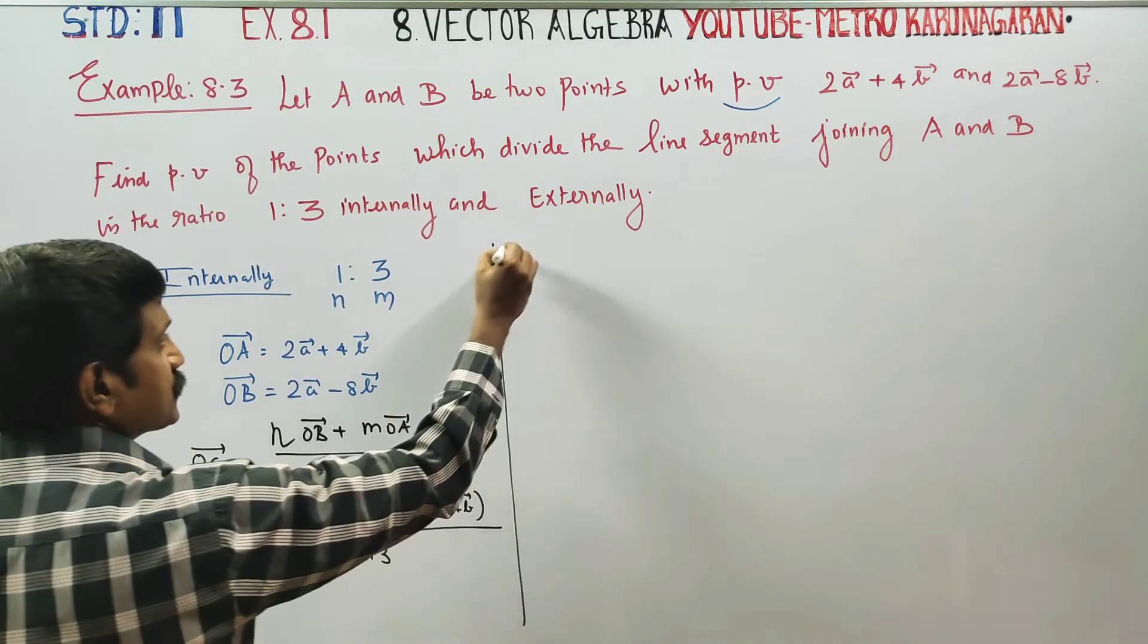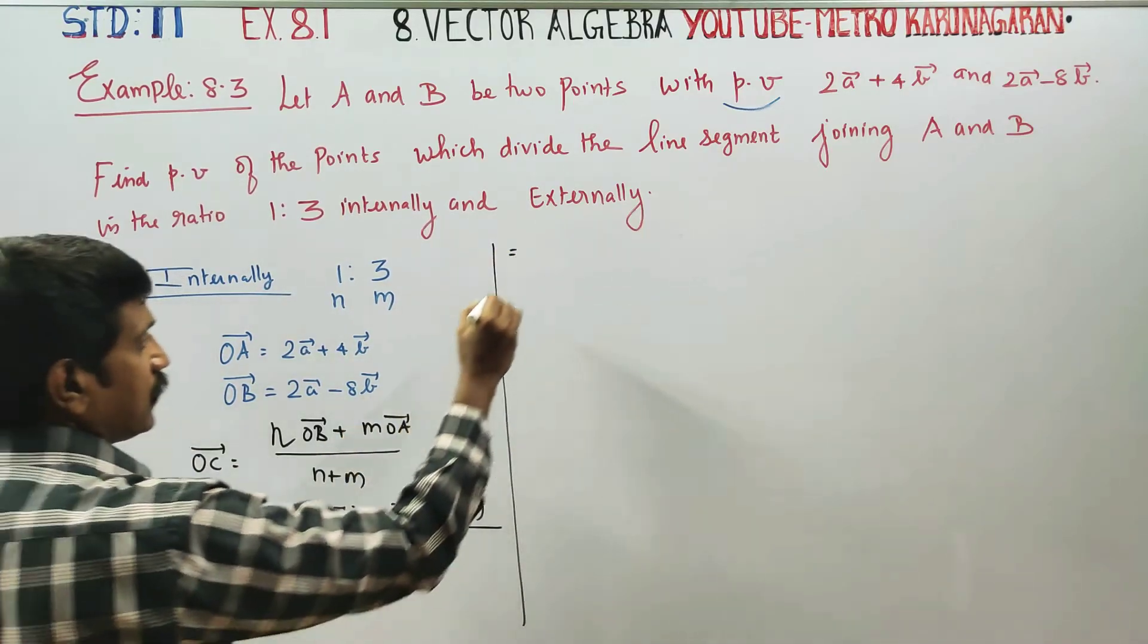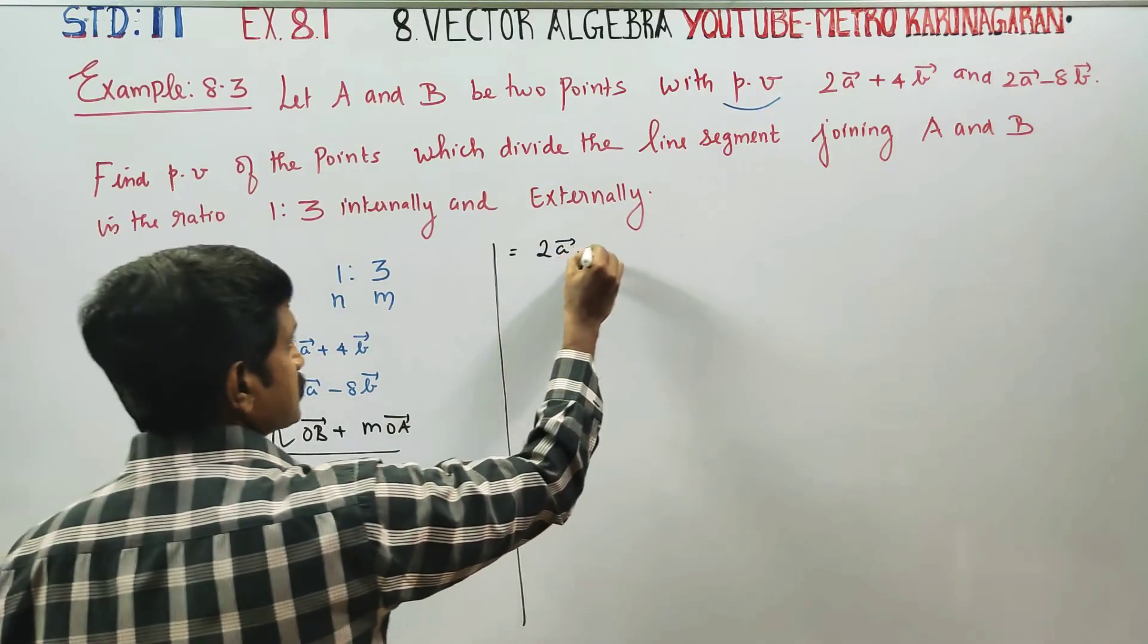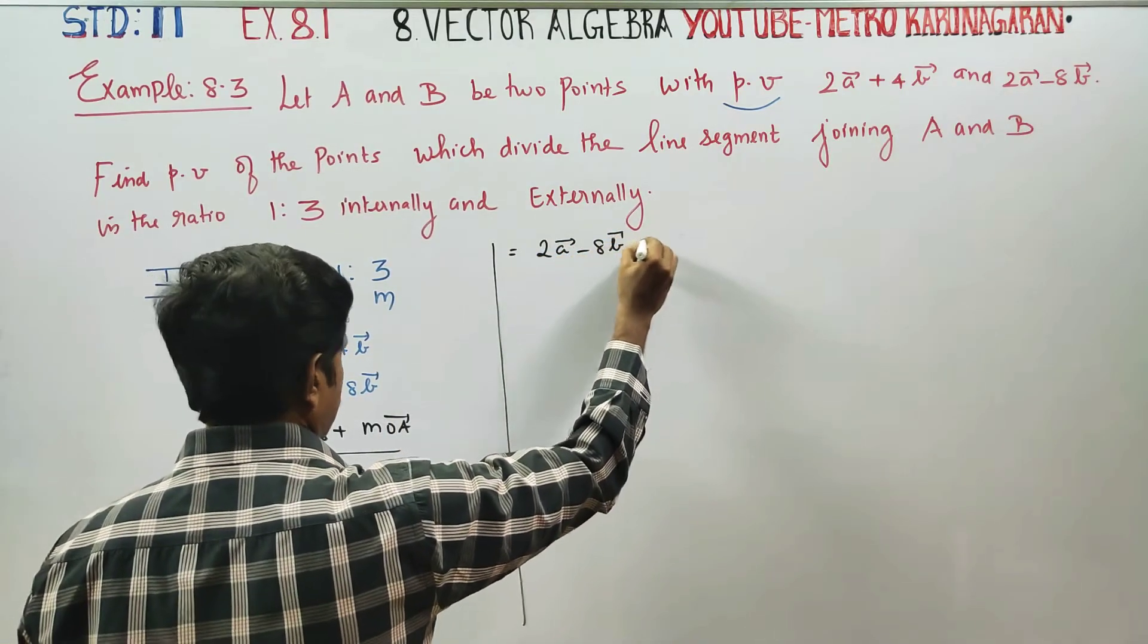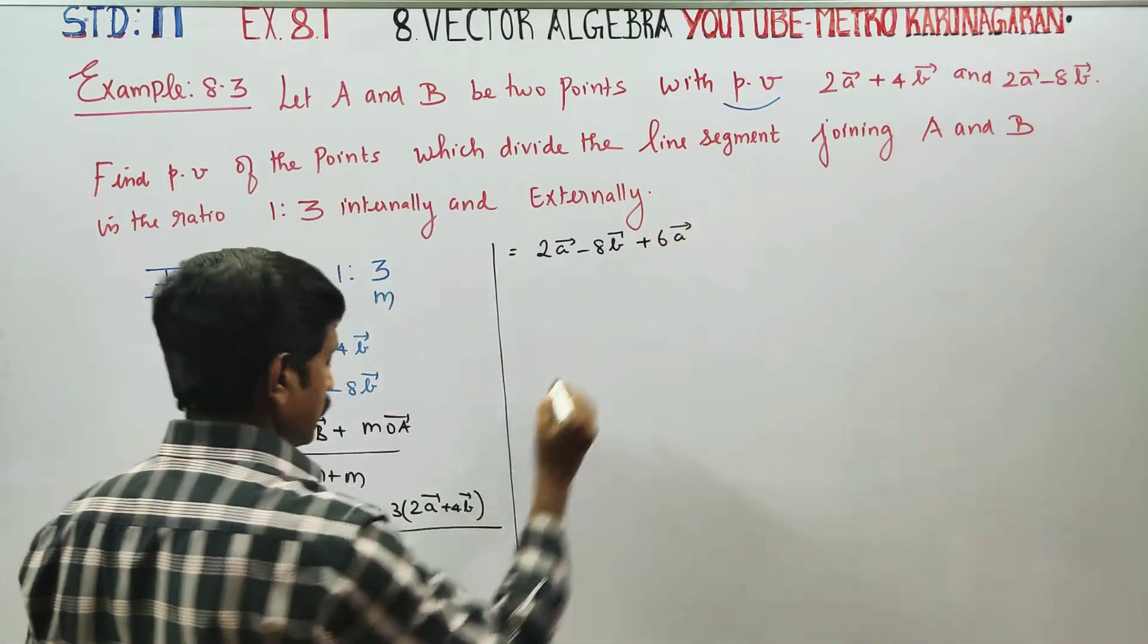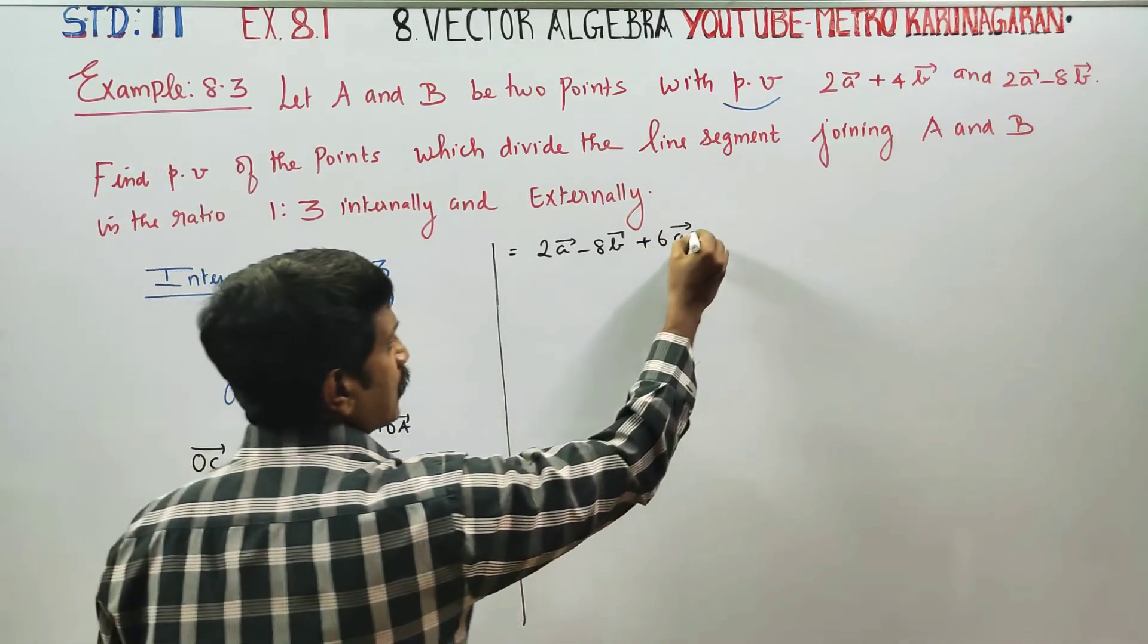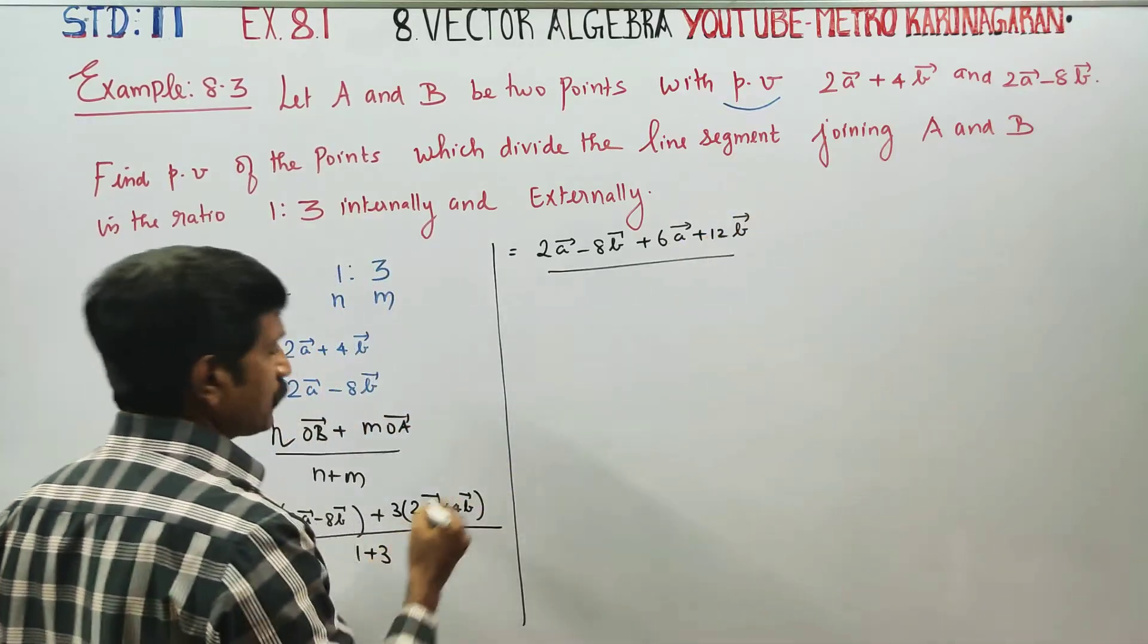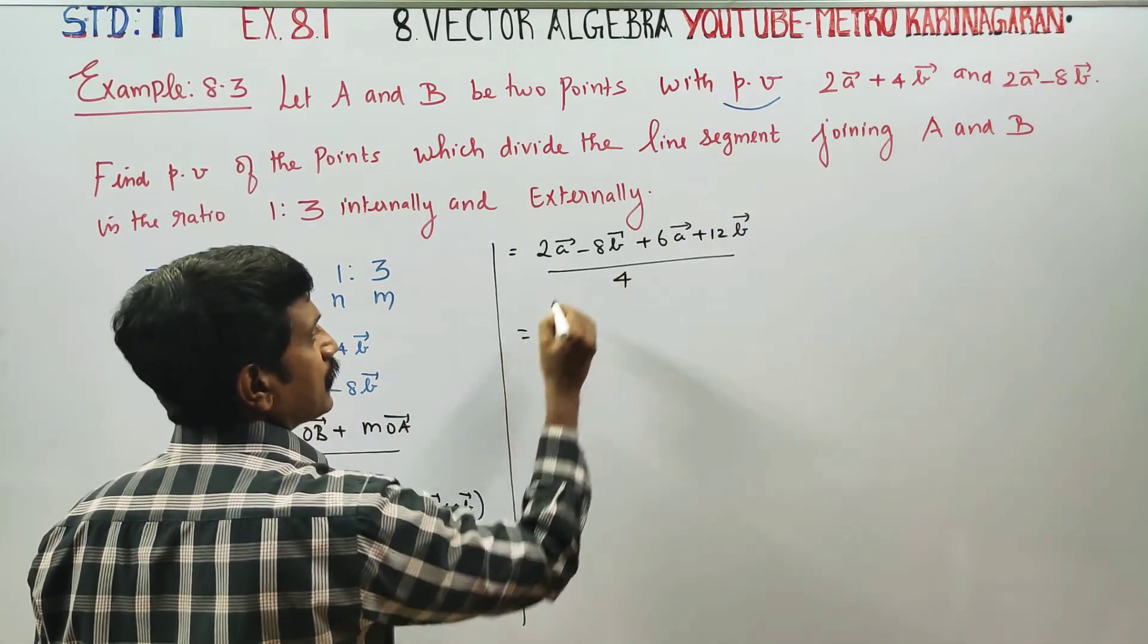Next stage, 1 into 2a is 2a, minus 8b. 3 into, 3 twos are 6a vector, 6a vector, 3 fours are 12b. Over divided by 1 plus 3 is 4.